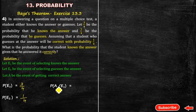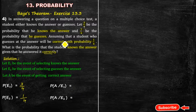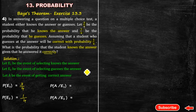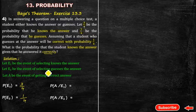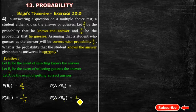Next, we need probability of A given E1, and probability of A given E2. The student who guesses the answer correctly has a probability of 1/4, since it is a multiple choice question. So probability of A given E2 is 1/4.